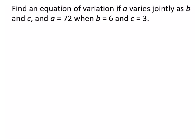So we're saying A varies jointly with B and C. So A will equal K times B times C. So we want the equation for this, right, which means that all we're going to need to do is find K.